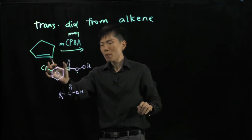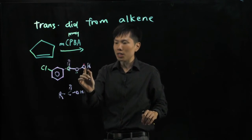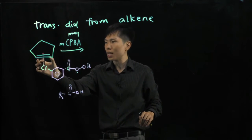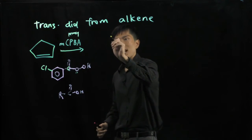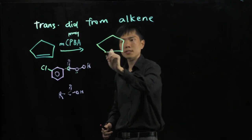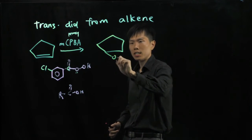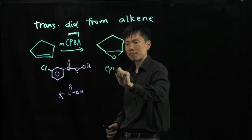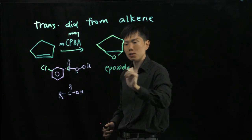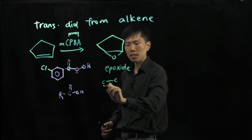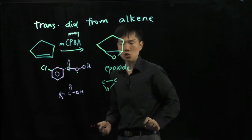Now, what happens is this MCPBA will deliver the oxygen onto the carbon-carbon double bond. So in the first step, what you see is actually an epoxide. Epoxide meaning you have a carbon, carbon single bond, and the last atom of the three-membered ring is an oxygen.